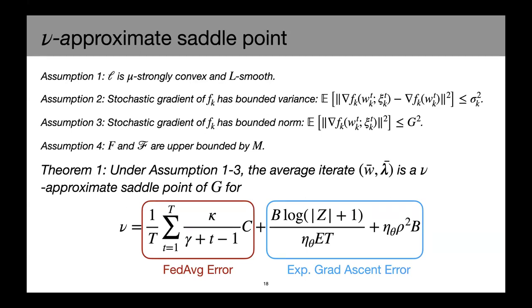Here are some of the assumptions we needed for the convergence analysis, and most of them are standard assumptions in the context of federated learning, for example, smoothness, bounded gradient variance, bounded gradient norm. And we show that under these assumptions, the average iterate is a nu approximate saddle point for the following nu, where the nu could be decomposed as a federated averaging error and exponential gradient descent error. If we pick this eta theta, which is the gradient descent learning rate carefully, this is approximately order of log t over t plus one over square root of t. So if you train long enough, this could converge to zero.